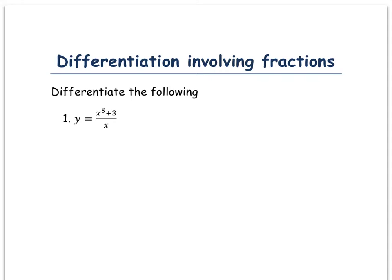We can't differentiate this as it is at the moment. What we need to do is split this into two separate fractions. So we've got y equals x to the power of five over x, and we've also got three over x — two separate parts.